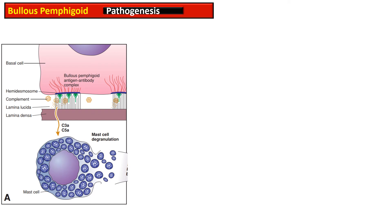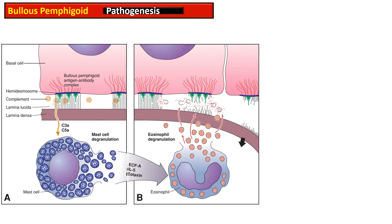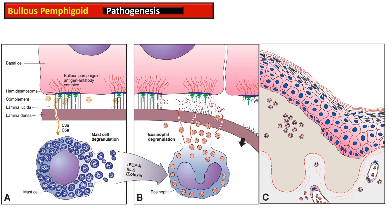This illustration shows the bullous pemphigoid antigen-antibody complex fixing complement, resulting in anaphylatoxin activation and mast cell degranulation. Mast cell degranulation causes release of ECF, interleukin-5, and eotaxin, which recruit eosinophils. Eosinophilic degranulation then separates the basal keratinocyte layer at the level of the lamina lucida, resulting in sub-epidermal blister formation.